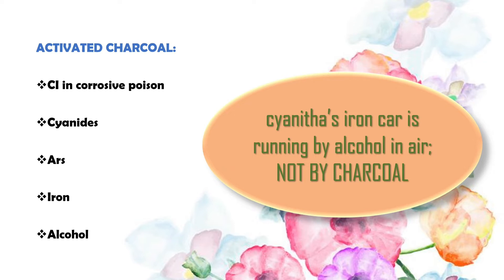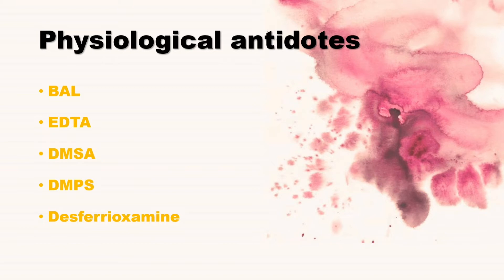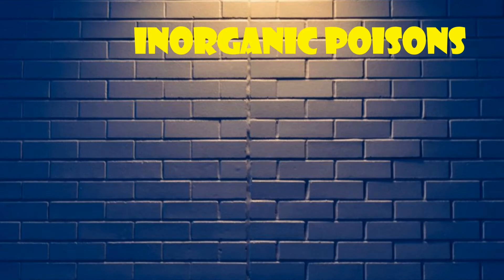Now, physiological or pharmacological antidotes. We are not going to discuss these in detail — just remember the abbreviations: BAL, EDTA, DMSA, and DMPS. They are physiological antidotes and mainly act on the tissues of the body, producing symptoms exactly opposite to those caused by the poison.